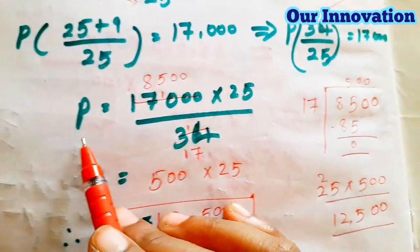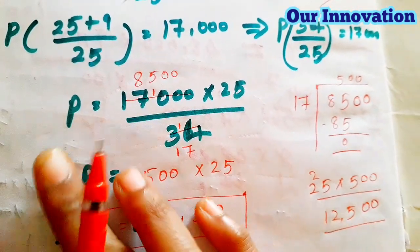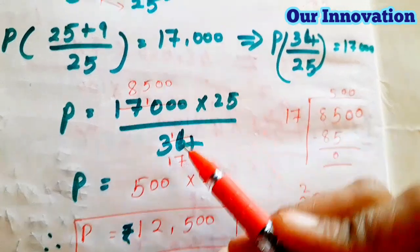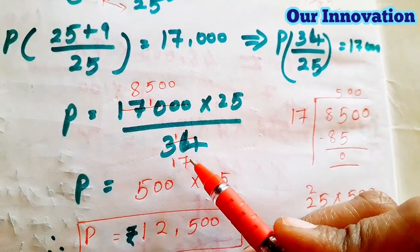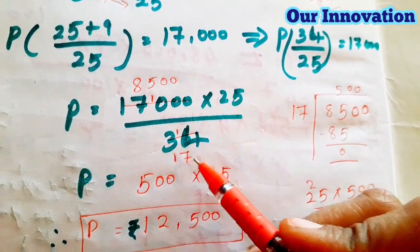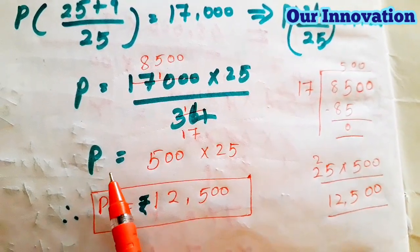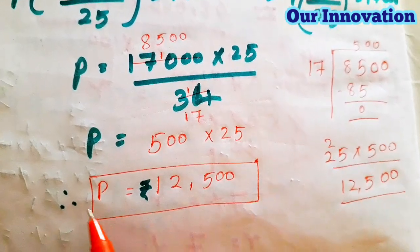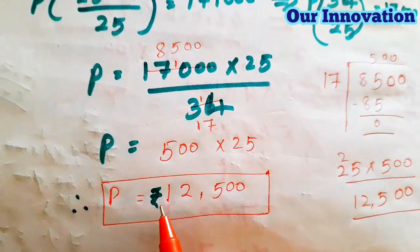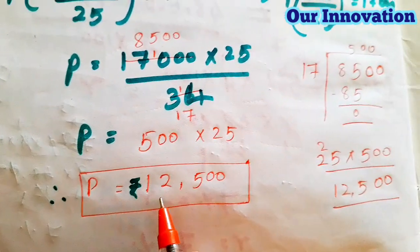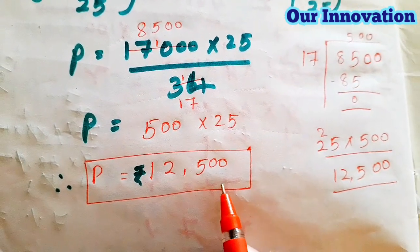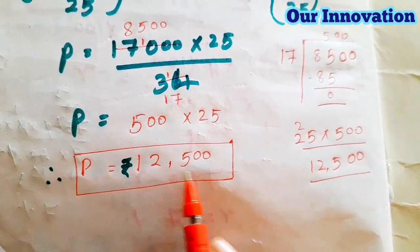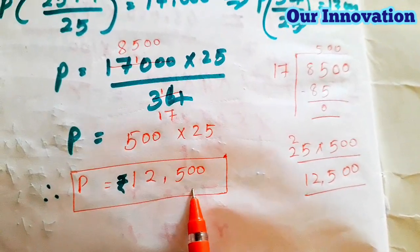Solving for P: P = 17,000 × 25/34. Cancelling: 17 × 5 = 85, so we get 500. Therefore P = 500 × 25 = ₹12,500. So the principal value is ₹12,500.